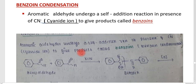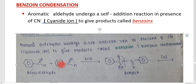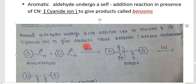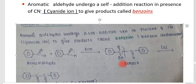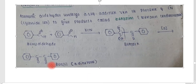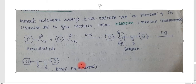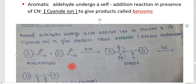The next reaction is benzoin condensation — a simple reaction in which an aromatic aldehyde undergoes self-addition. Two molecules of benzaldehyde react with each other. The reaction occurs in the presence of two catalysts: mainly the cyanide ion, and also thiamine hydrochloride. With the cyanide ion, the product formed is called benzoin, which can be further oxidized to form benzil. So benzaldehyde undergoes self-addition to form benzoin — this is called the benzoin condensation.